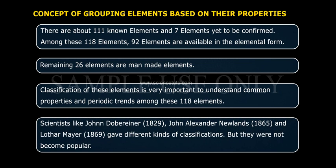Scientists like John Döbereiner in 1829, John Alexander Newlands in 1865, and Lothar Meyer in 1869 gave different kinds of classifications, but they did not become popular.